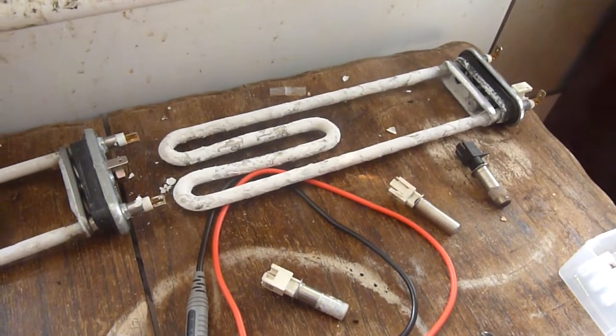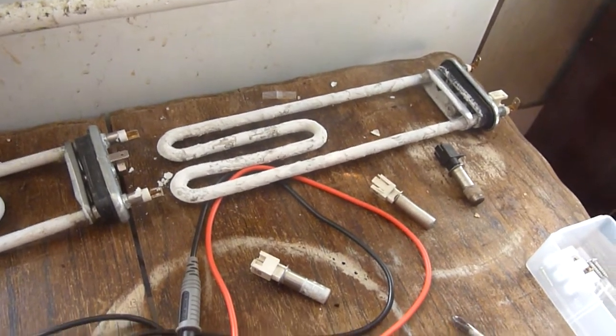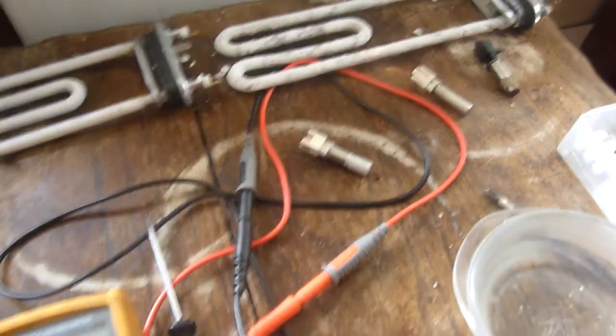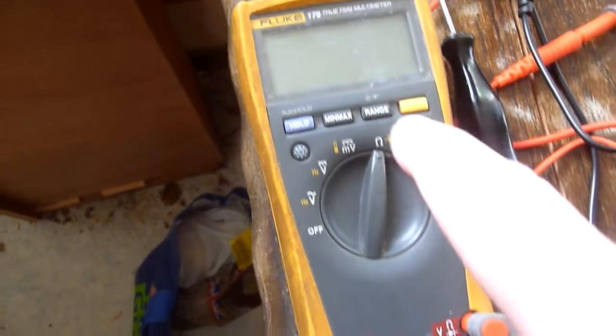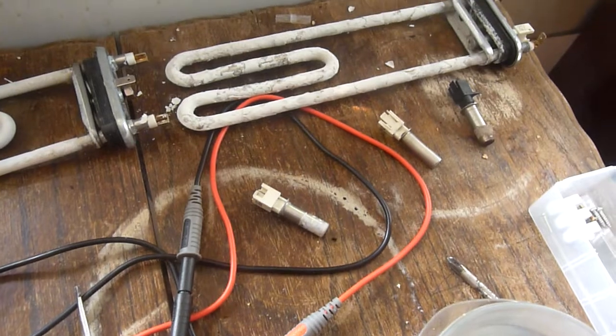If you can't read on the side what the rating is, then you can use a multimeter set to ohms to show you what they are.